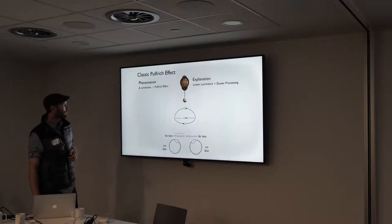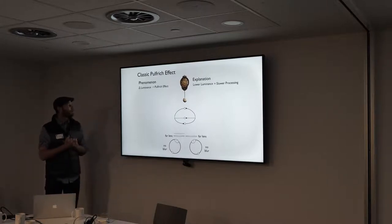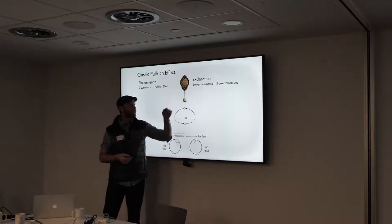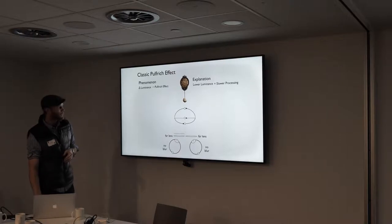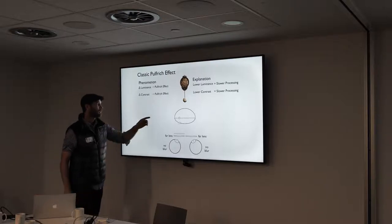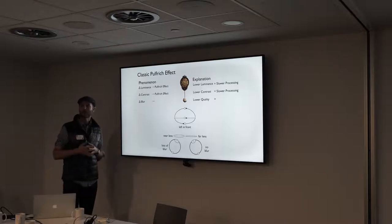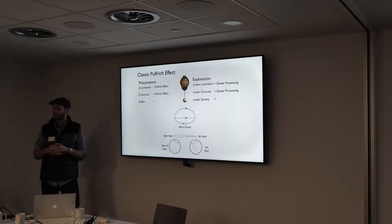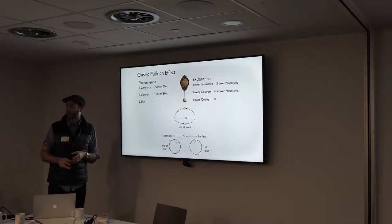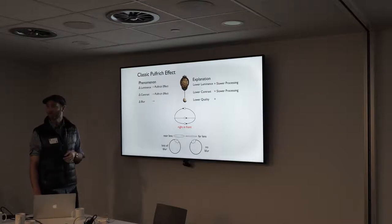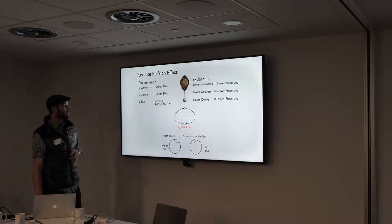Now we get to the new stuff. We know that a luminance difference between the eyes produces a Pulfrich effect — the darker eye gets processed more slowly. We also know that a contrast difference produces a Pulfrich effect — the lower contrast image gets processed more slowly. And since blurring an image reduces contrast, we expected the same thing. But instead of a classic Pulfrich effect, we saw a reverse Pulfrich effect. Instead of left-in-front motion, we saw right-in-front motion — implying that the blurry image is actually being processed more quickly.